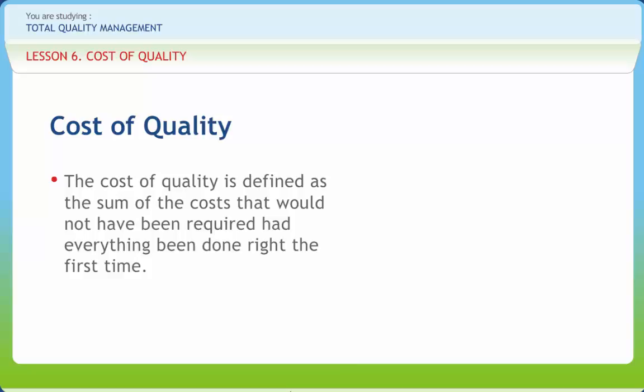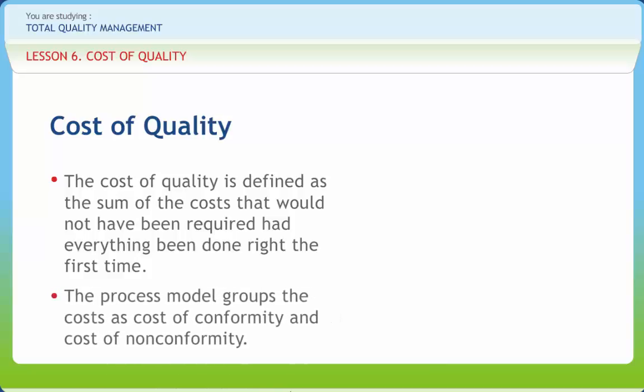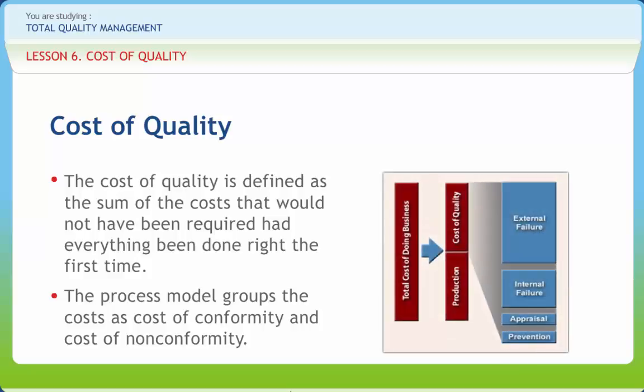Feigenbaum proposed categorization of quality costs into prevention, appraisal, and failure costs. The process model groups the costs as cost of conformity and cost of nonconformity. Cost of nonconformity is the cost incurred due to failure of the existing process. The cost of quality is generally the sum of conformance and nonconformance costs.